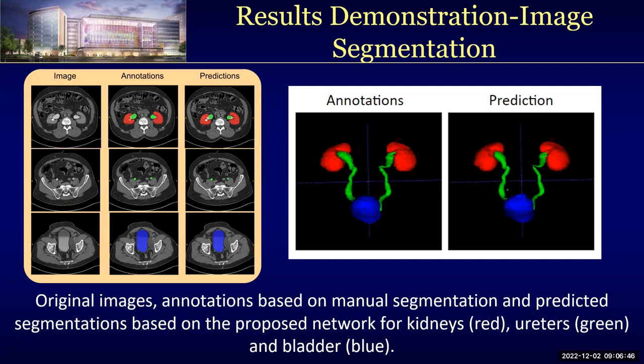For the image on the right, we display the 3D view of our annotated labels and our predictions. Our predictions are generally very close to the annotations and correctly labeled the kidneys, ureters, and bladders.